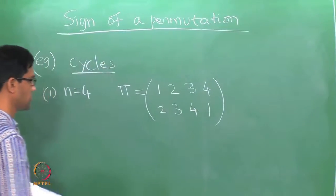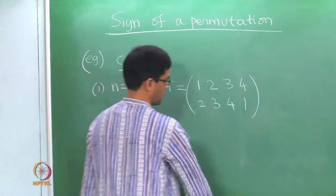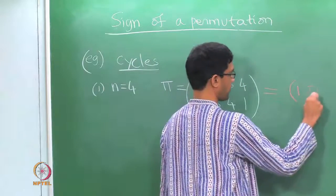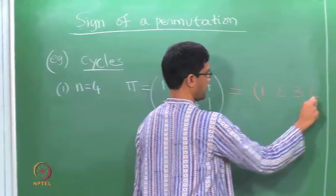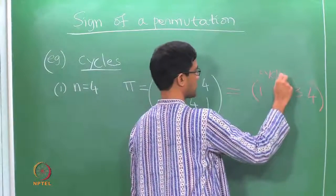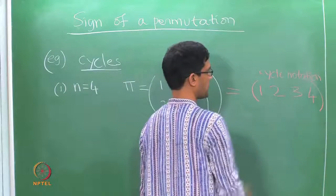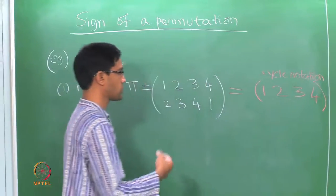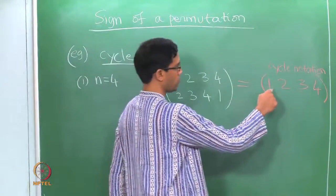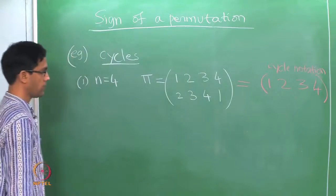Notice that another notation for permutations is cycle notation. In cycle notation, the same permutation is represented by the four numbers 1, 2, 3, 4 written in brackets. This means 1 goes to 2, goes to 3, goes to 4, and goes back to 1.